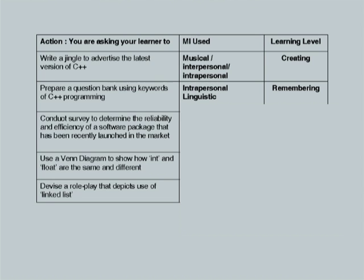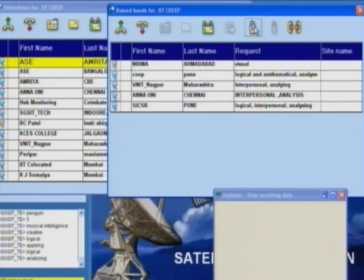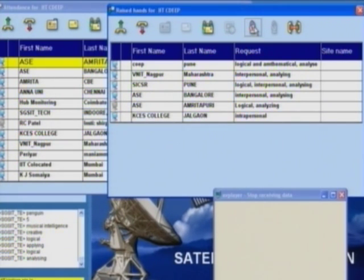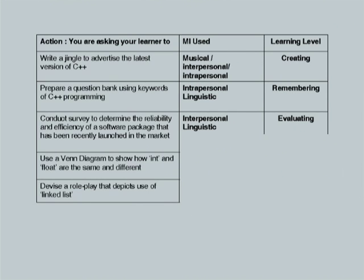Third action: 'Conduct a survey to determine the reliability and efficiency of a software package that has been recently launched in the market.' What MI am I using? It is Interpersonal and Linguistic — conducting a survey involves talking and engaging with others. At learning level it is Evaluation, because I want to test reliability and efficiency of a software package — this requires a lot of fifth-order thinking.